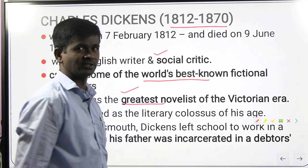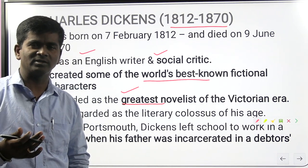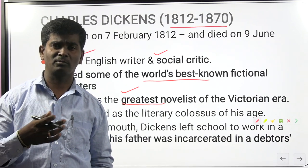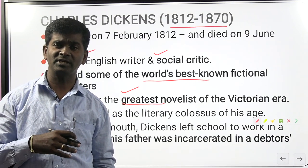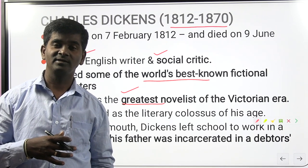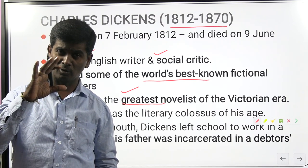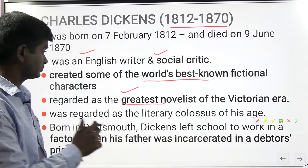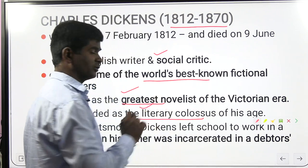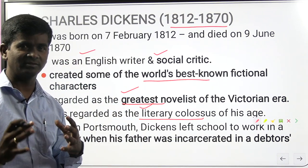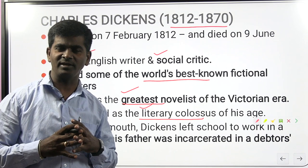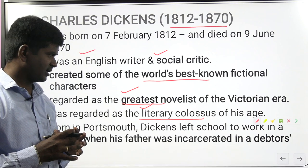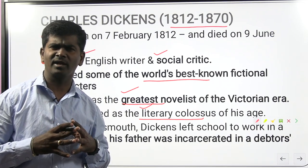When we talk about Victorian novelists like Charles Dickens, William Thackeray, Thomas Hardy, Oscar Wilde, Charlotte Brontë, Anne Brontë, Emily Brontë, George Eliot, and Elizabeth Gaskell, Samuel Butler — the greatest one is Charles Dickens. He is also considered to be the literary colossus, the greatest writer of the Victorian period.